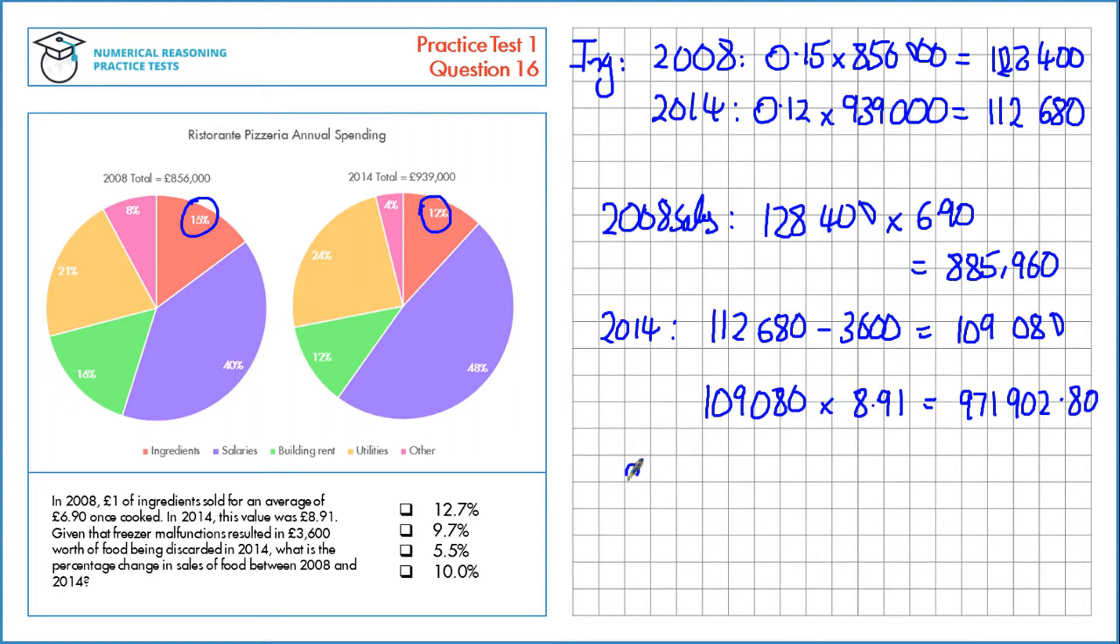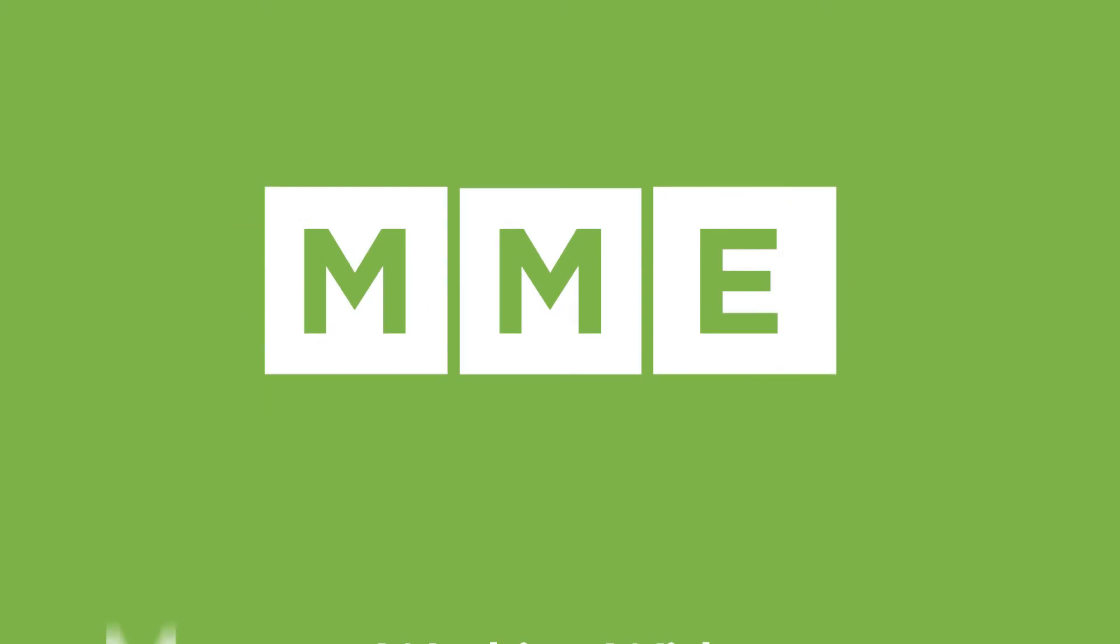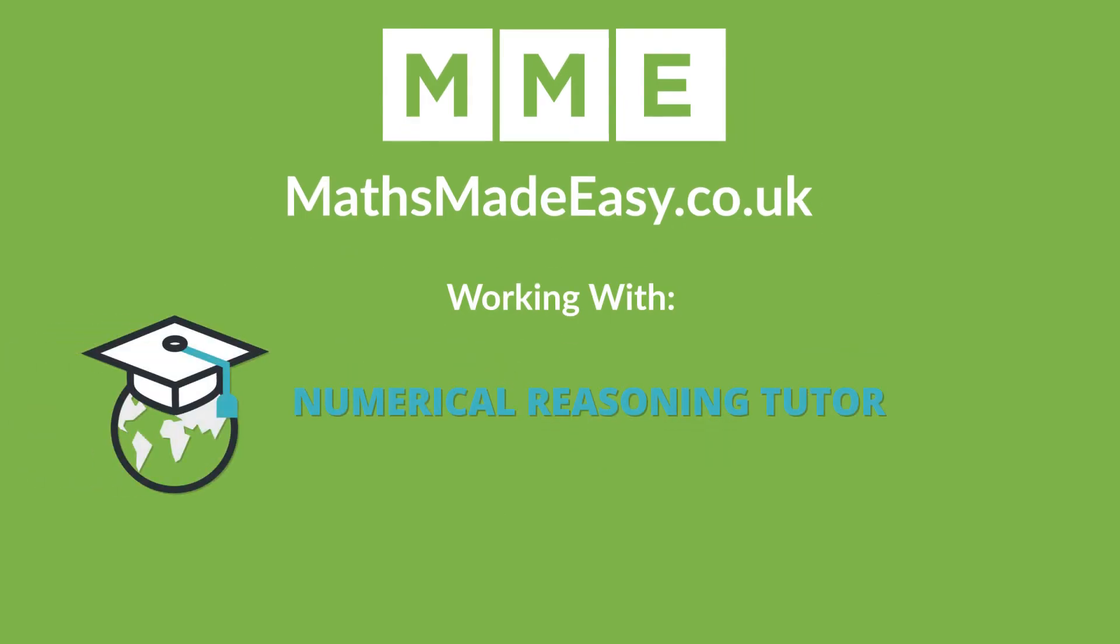Now we just have to work out the percentage change: the new value, 971,902.8, subtract the old value, divided by the old value, and multiply it by 100. That's a percentage change of 9.7%. Hope you understand. Thank you.